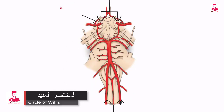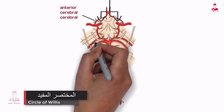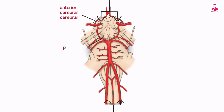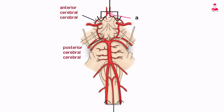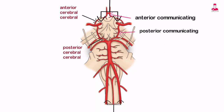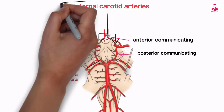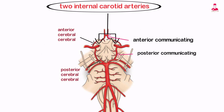The circle of Willis is formed by the anterior and posterior cerebral, anterior and posterior communicating, and the internal carotid arteries.